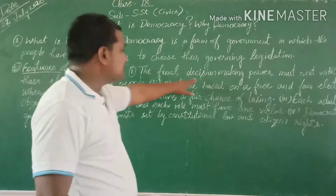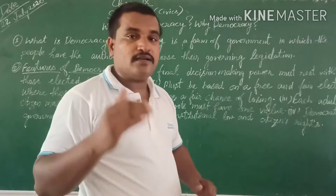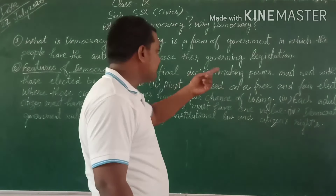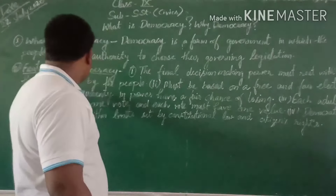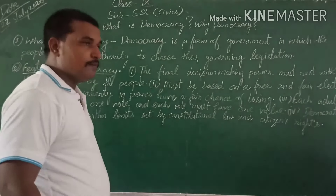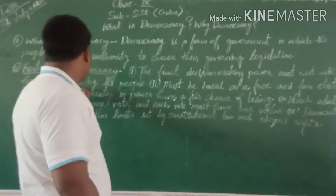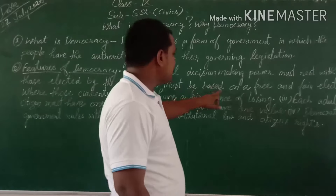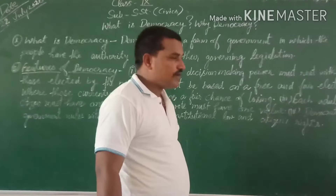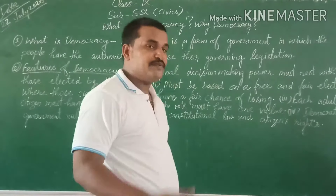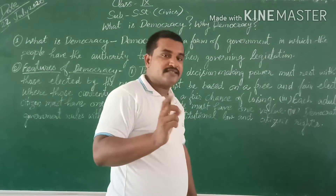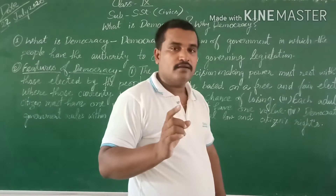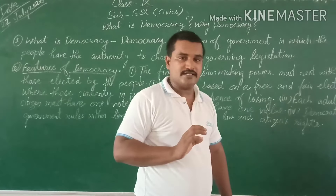It means the final decision — all decisions are being made — but the final decision will be taken by those who are elected by the people. The second feature is: democracy must be based upon free and fair elections. As we all know, elections occur in India after every five years.